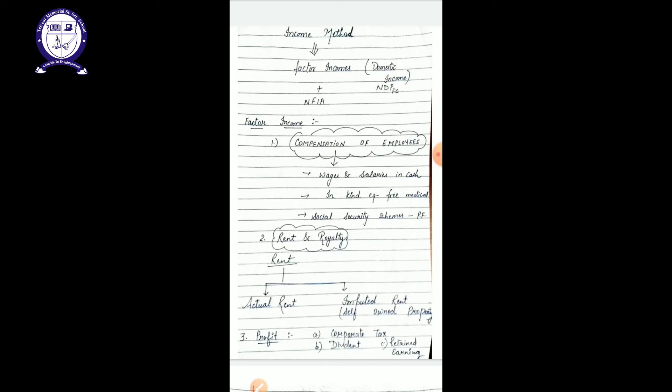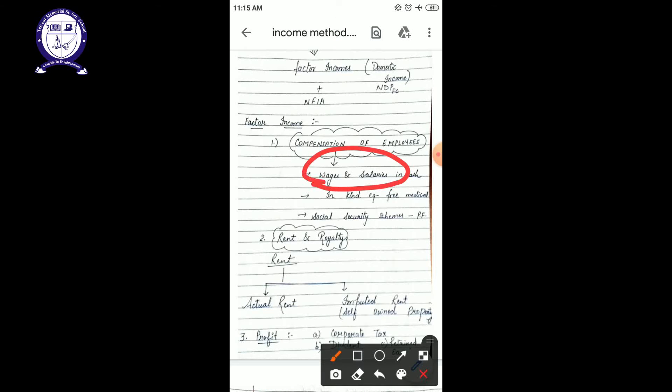Whatever we are paying to them, whether we are paying it in cash. If we are paying it in cash then it will be called as your wage and salary in cash. If we are paying it in the form of kind, that means non-monetary benefits.